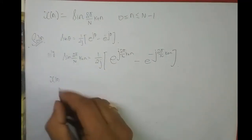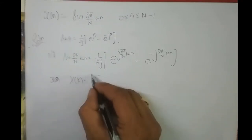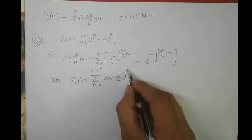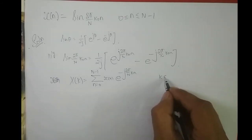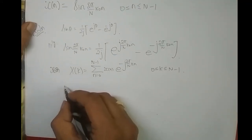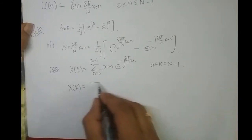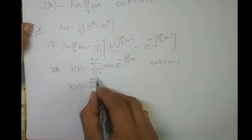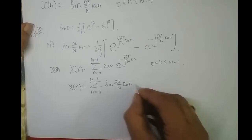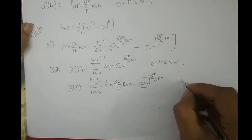So X(k) is equal to what? The DFT formula is: summation n from 0 to N−1 of x[n] · e^(−j2π/N · kn), where k varies from 0 to N−1. So X(k) equals summation n from 0 to N−1 of sin(2π/N · k₀n) · e^(−j2π/N · kn).